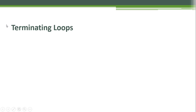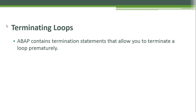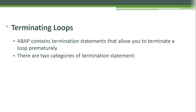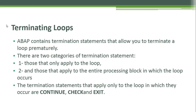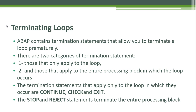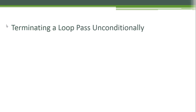Terminating loops: ABAP contains termination statements that allow you to terminate a loop prematurely. There are two categories: those that only apply to the loop, and those that apply to the entire processing block in which the loop occurs. The termination statements that apply only to the loop are CONTINUE, CHECK, and EXIT. The STOP and REJECT statements terminate the entire processing block.